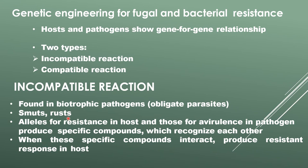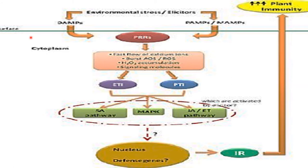Biotrophic pathogens include obligate parasites such as smuts and rusts. Alleles for resistance in the host and alleles for virulence in the pathogen produce specific compounds that recognize each other. When these compounds interact, they produce a resistance response in the host, associated with a hypersensitive reaction triggered by unique molecules called elicitors of pathogen origin. Elicitors are recognized by receptor-like molecules present in the plant.